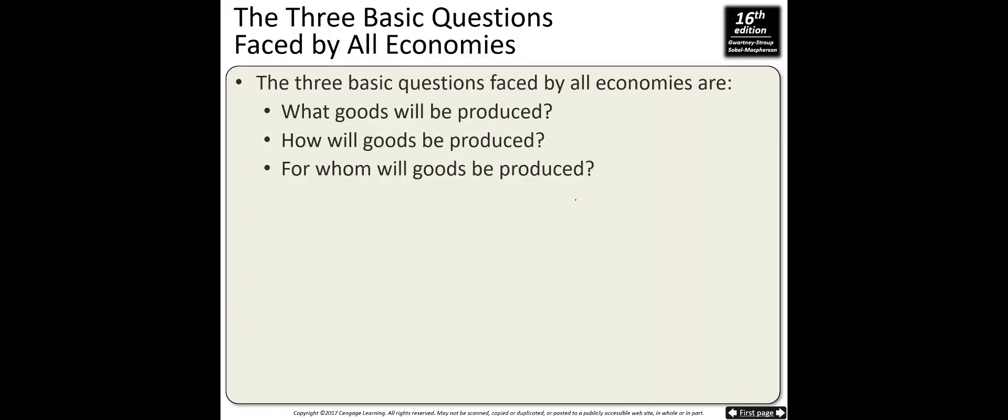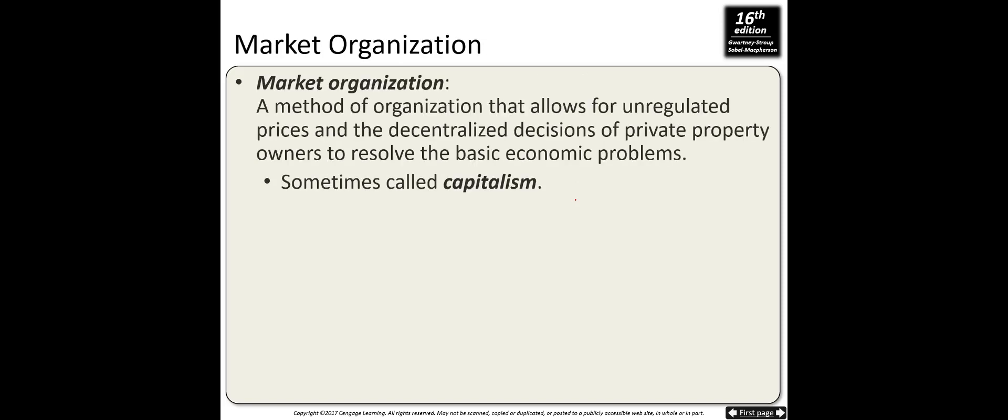Finally, we talk about economic organizations. There are three basic questions: What goods will be produced? How will goods be produced? For whom will goods be produced? Based on the answers, we have two main economic systems. The first is market organization, where buyers and sellers make decentralized decisions and the price mechanism answers what to produce — for example, if Toyota hybrid cars are in demand, that market grows.